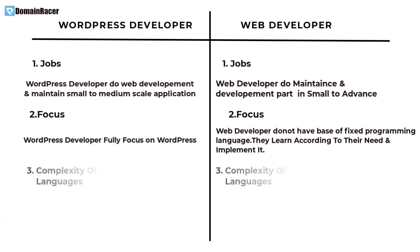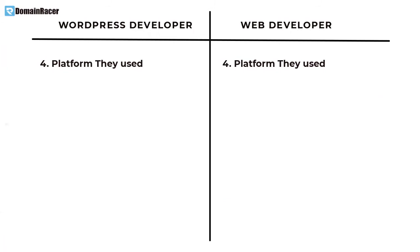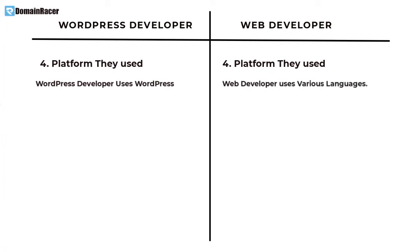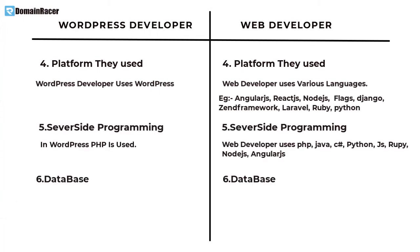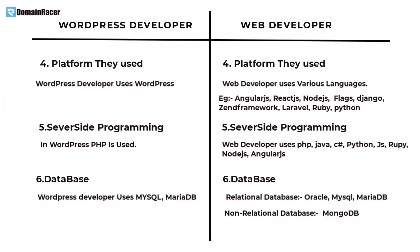The third point is complexity of programming language, and the fourth point is the platform, framework, or tool used. A WordPress developer uses WordPress. But a web developer uses various programming languages and various frameworks — for example, AngularJS and React. There are also two types of databases, different programming languages, and everything else in between.